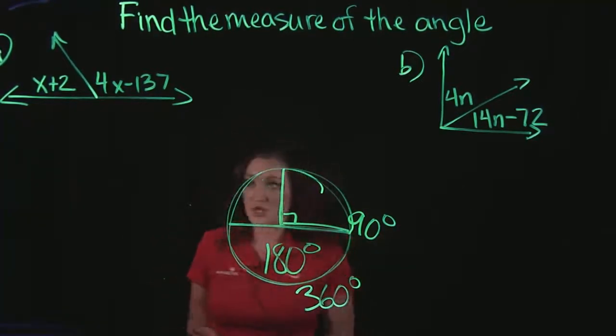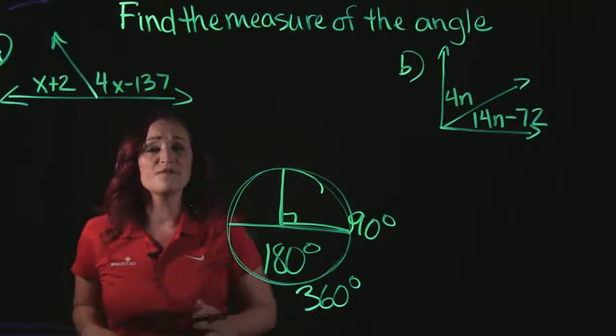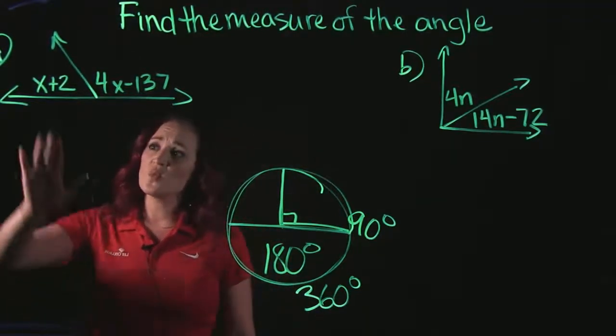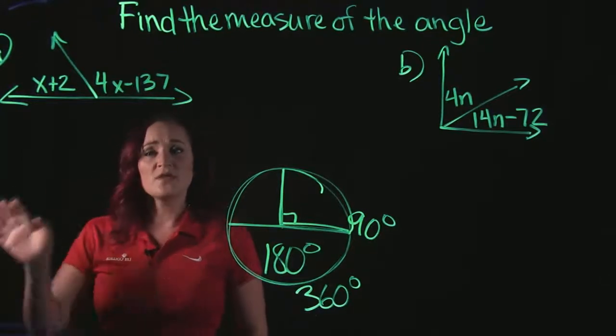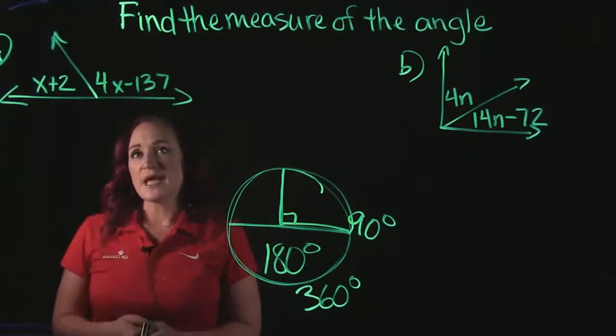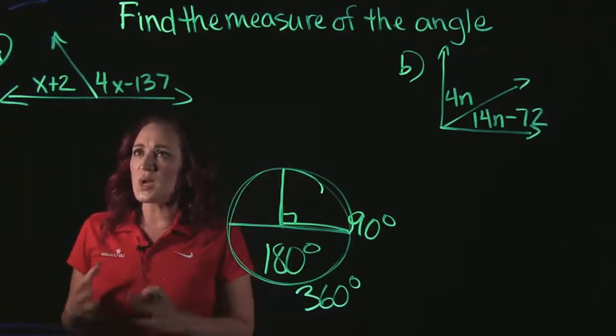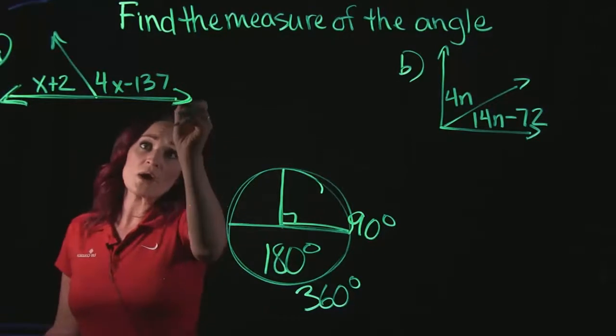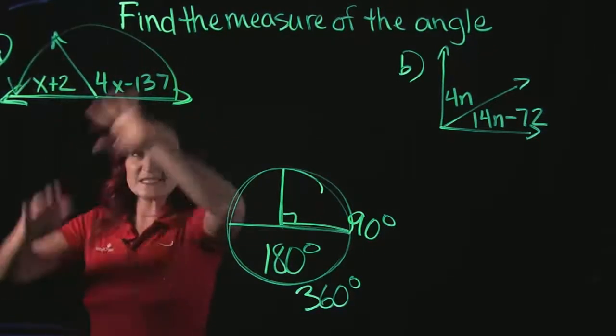Starting with example A, we have these two angles and we need to figure out what are these two angles equal to. We're given that one angle is x plus 2 and the other one is 4x minus 137. And what we need to understand about this is that these two angles make up a straight angle or essentially a semi-circle.